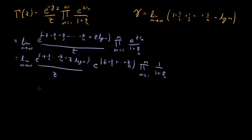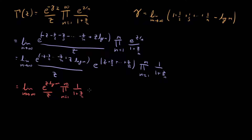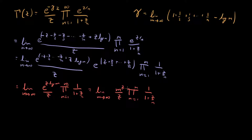This simplifies a great deal and what we get is the limit as m goes to infinity of e to the z log m over z times the product from n equals 1 to m of 1 over 1 plus z over n. The term e to the z log m is also known as m to the z, so we can rewrite this as m to the z over z times the finite product from n equals 1 to m of 1 over 1 plus z over n. This is starting to look closer to the Euler product definition, but we need to rewrite m to move it inside the product.